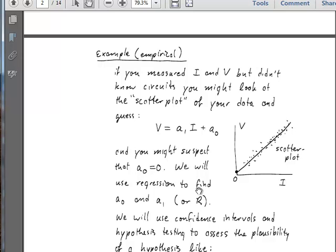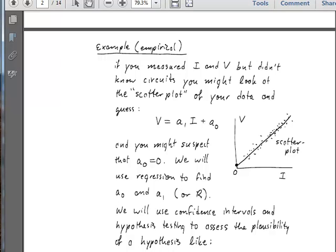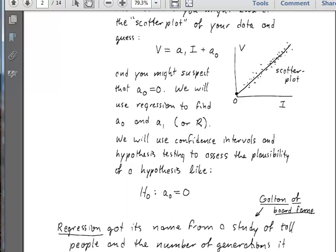What we can do now is to use linear regression, in this case, to find these constants A0 and A1. And we can also go through and do some hypothesis testing to see whether it's plausible to make the hypothesis that this intercept in this equation is actually zero.